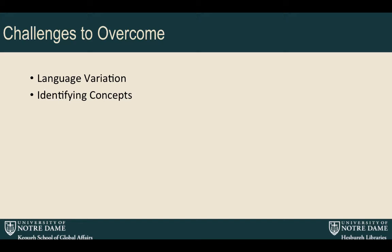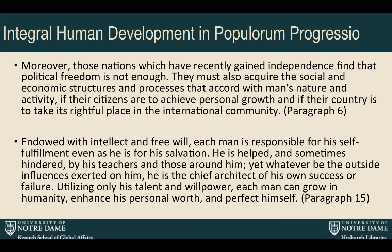We also wanted to narrow in on search results at the paragraph level, but return more than a standard text search would find. For example, 'human development' is something both fields are very interested in, but a lot of the time the text doesn't actually say 'human development' — it might say 'personal growth,' 'enhancing personal worth,' or 'architect of his own success.' We wanted those paragraphs to come back when a user searched for human development, whereas other databases just search the text and only return what literally says 'human development.'